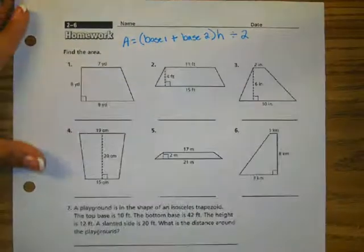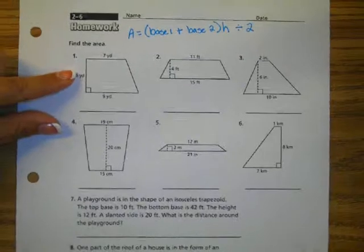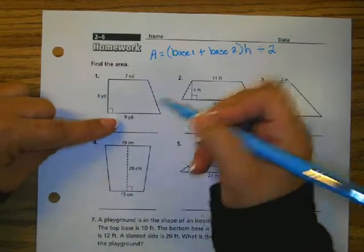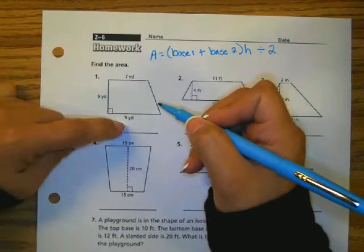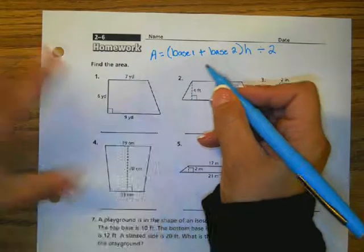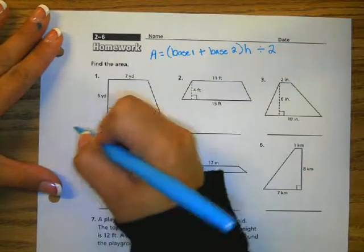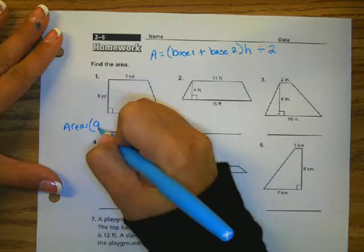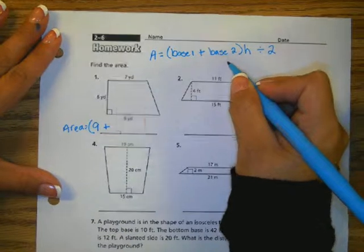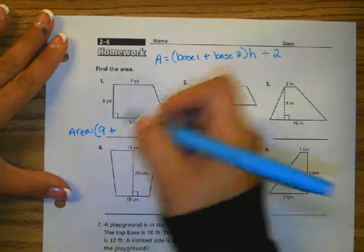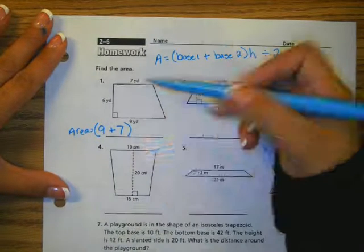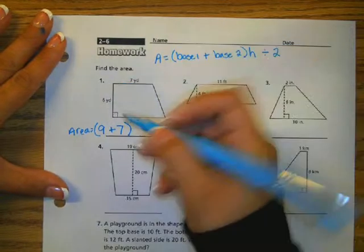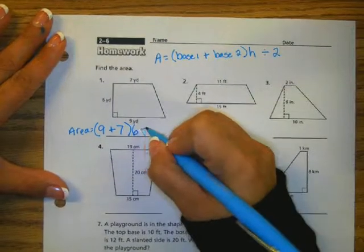For example, problem number 1. The base of a trapezoid is just what it sits on. Base 1 would be 9 yards. So I would say area equals 9 plus base 2, which is 7, times the height. This trapezoid has a right angle. The height is 6, divided by 2.